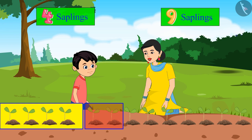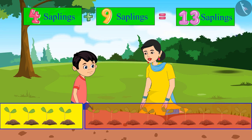And after four, this is the fifth sapling, this is the sixth, then seventh, eight, nine, ten, eleven, twelve, thirteen. That means we planted thirteen plants in total.